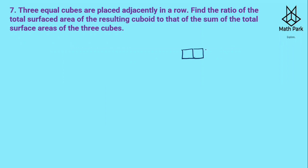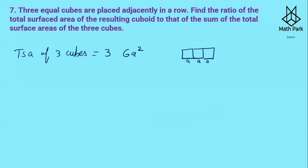Three equal cubes are placed adjacently in a row. Find the ratio of the total surface area of the resulting cuboid to the sum of the total surface areas of the three cubes. Let 'a' be the edge of one cube. For the resulting cuboid, the length becomes 3a, breadth = a, height = a. TSA of 3 cubes = 3 × 6a² = 18a².